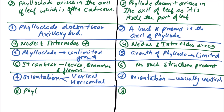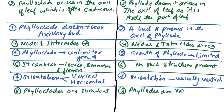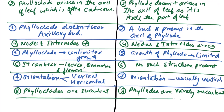The next difference is that phylloclades are succulent, while phyllodes are rarely succulent.